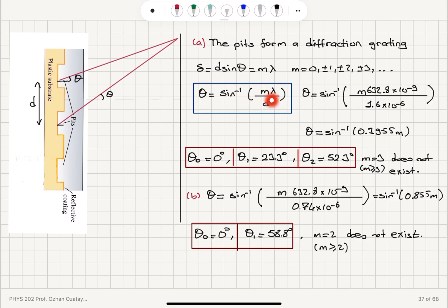So theta is sine inverse M lambda over D. So we just substitute lambda and D, the distance between two neighboring pits, for the case of CD and DVD.